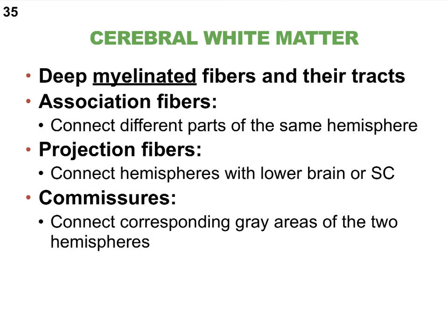I always think of white matter — whether in the brain or the spinal cord — as the freeway system of the CNS. If you have myelination, that means fast, fast propagation of action potentials. The white matter is where action potentials fly from left to right, up, down — whichever way they need to go. Depending on which directions the axons travel, they get different names.